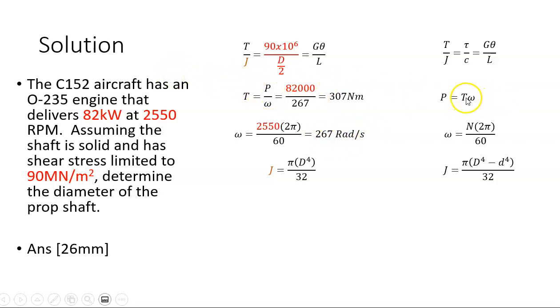The torque, we can arrange this equation. Torque is power over omega. The power was 82 kilowatts. Omega is 267. From here, that gives me a torque value of 307 Nm.